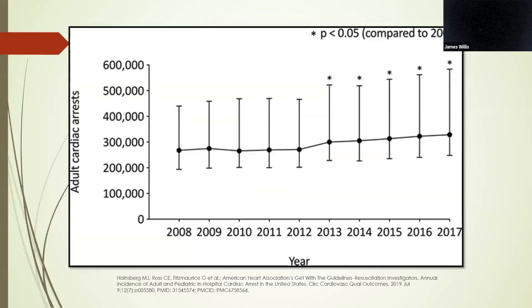So why does this matter? This review of the Get With The Guidelines registry from a few years back looked at the incidence of both adult and pediatric in-hospital cardiac arrest and found that the incidence of adult in-hospital cardiac arrest is increasing. This review was performed in 2019, so it doesn't capture the dramatic increase that we experienced during the COVID surge.